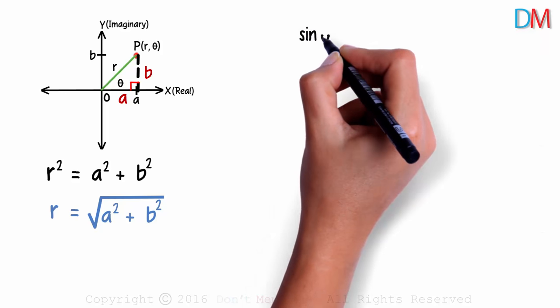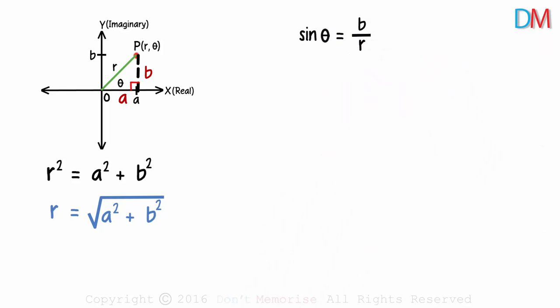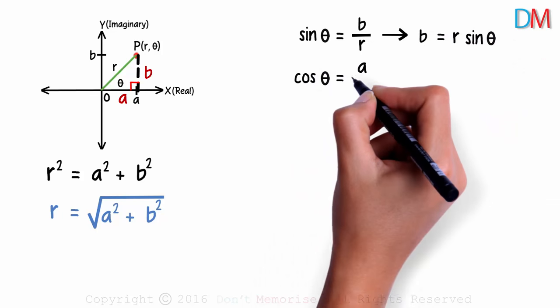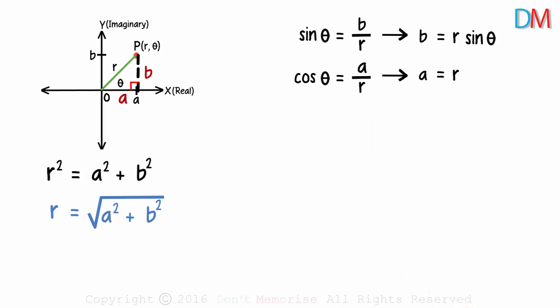So sin theta can be written as b over r. We get the value of b as r sin theta. Cos theta can be written as a over r, which tells us that a is r cos theta. Now we have a and b in terms of r and theta.